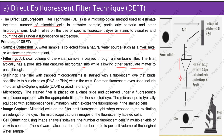The filter with trapped microorganisms is stained with a fluorescent dye that binds specifically to nucleic acids — DNA or RNA — within the cells. Common fluorescent dyes include DAPI and acridine orange. The stained filter is placed on a glass slide and observed under a fluorescence microscope equipped with appropriate filters and epifluorescence illumination, which excites the fluorophores in the stained cells.